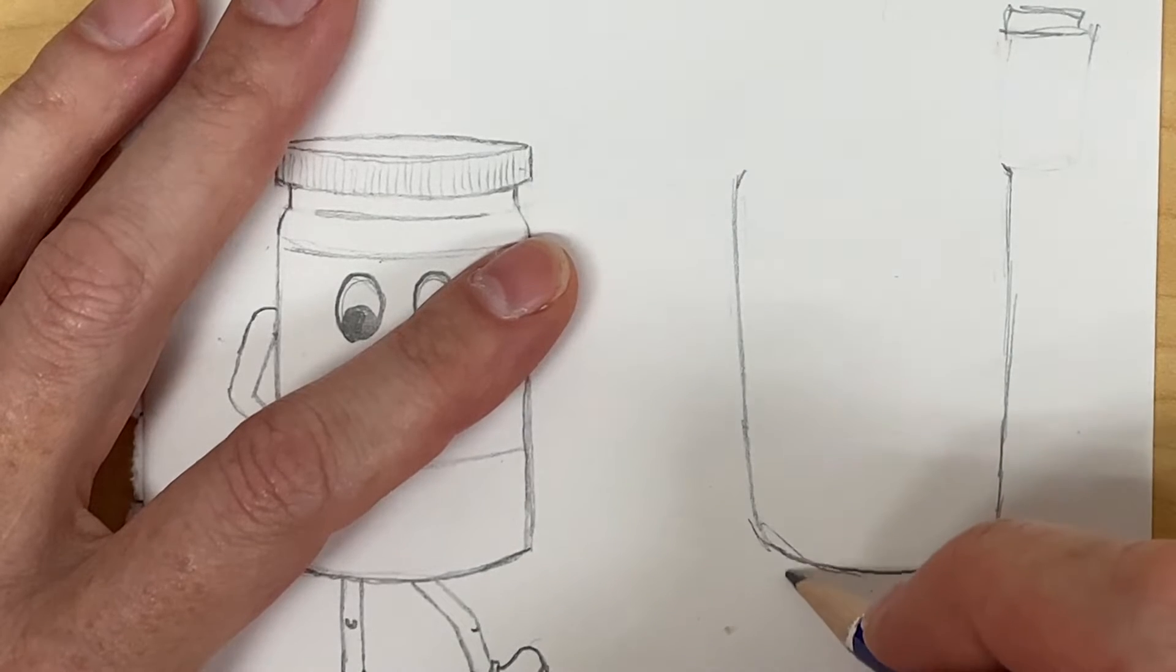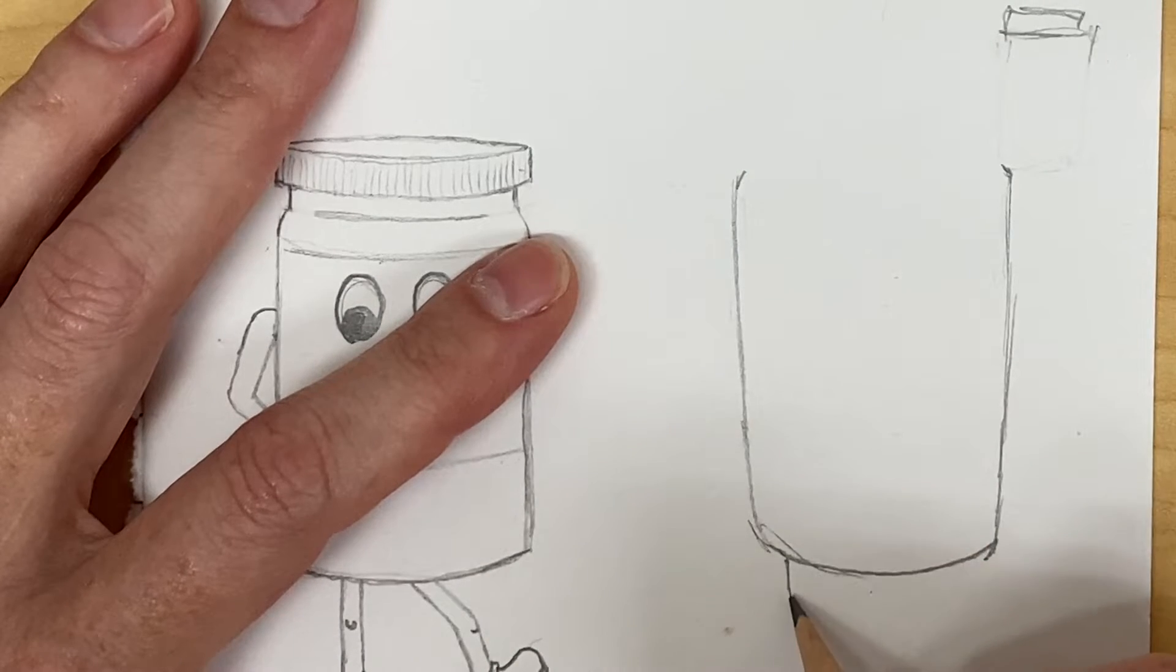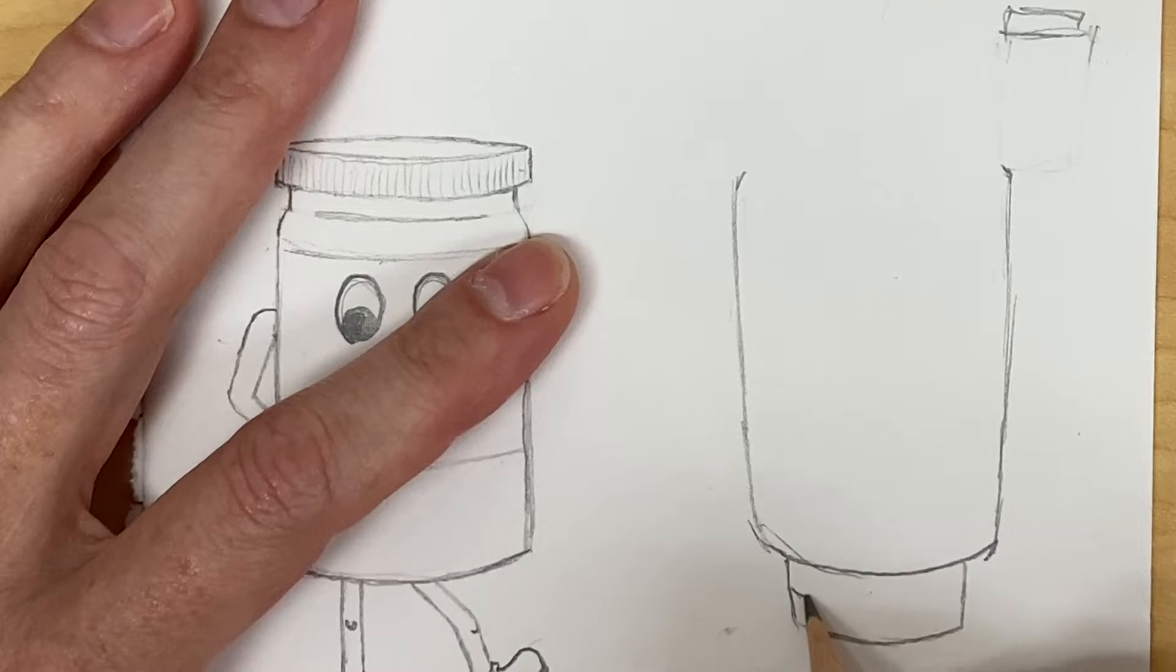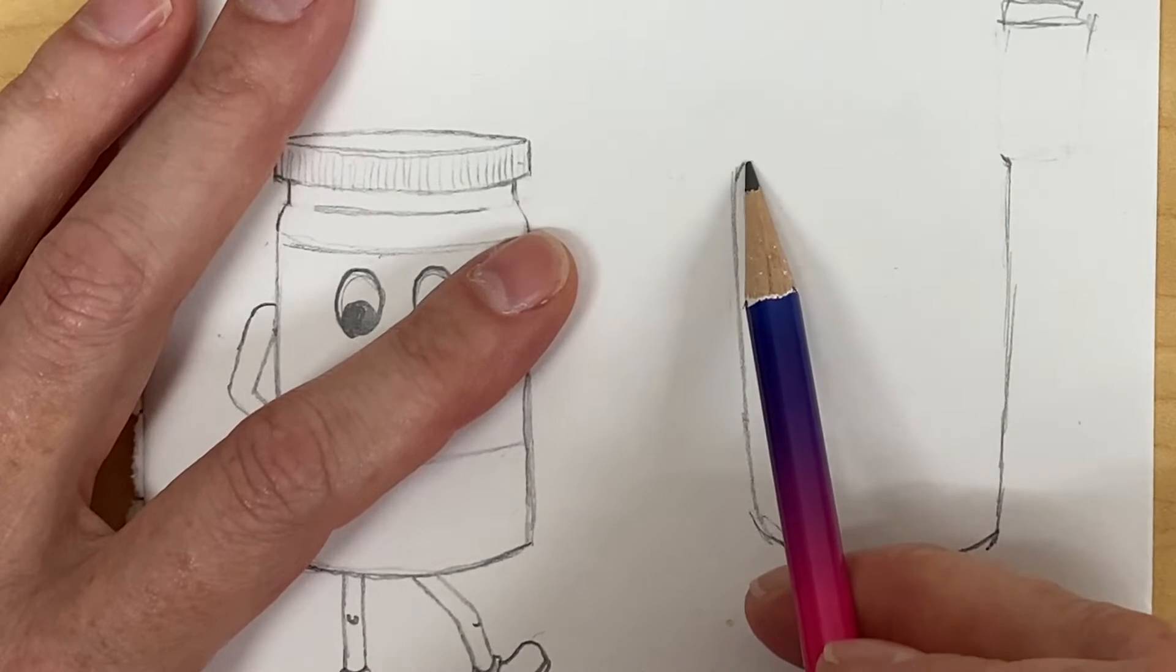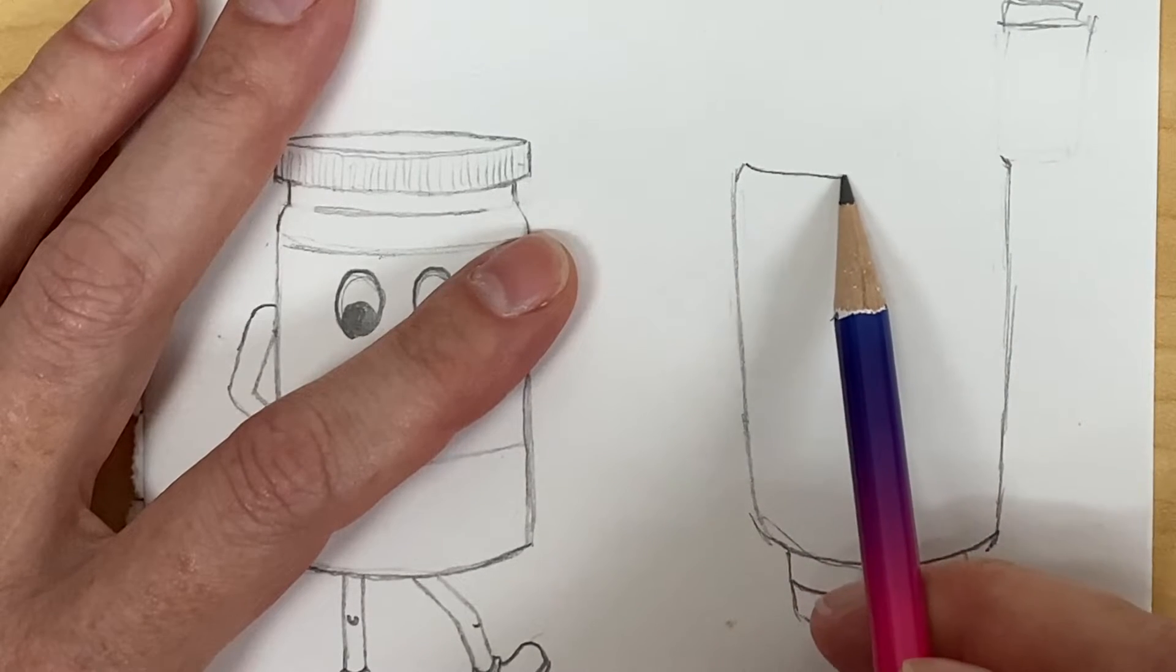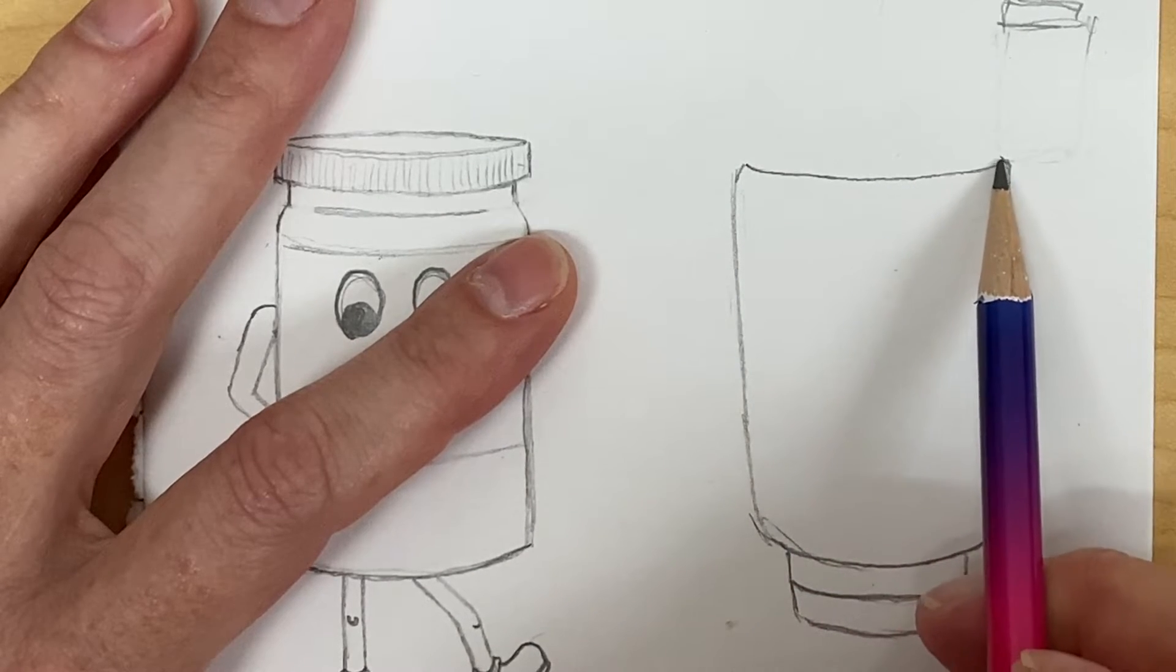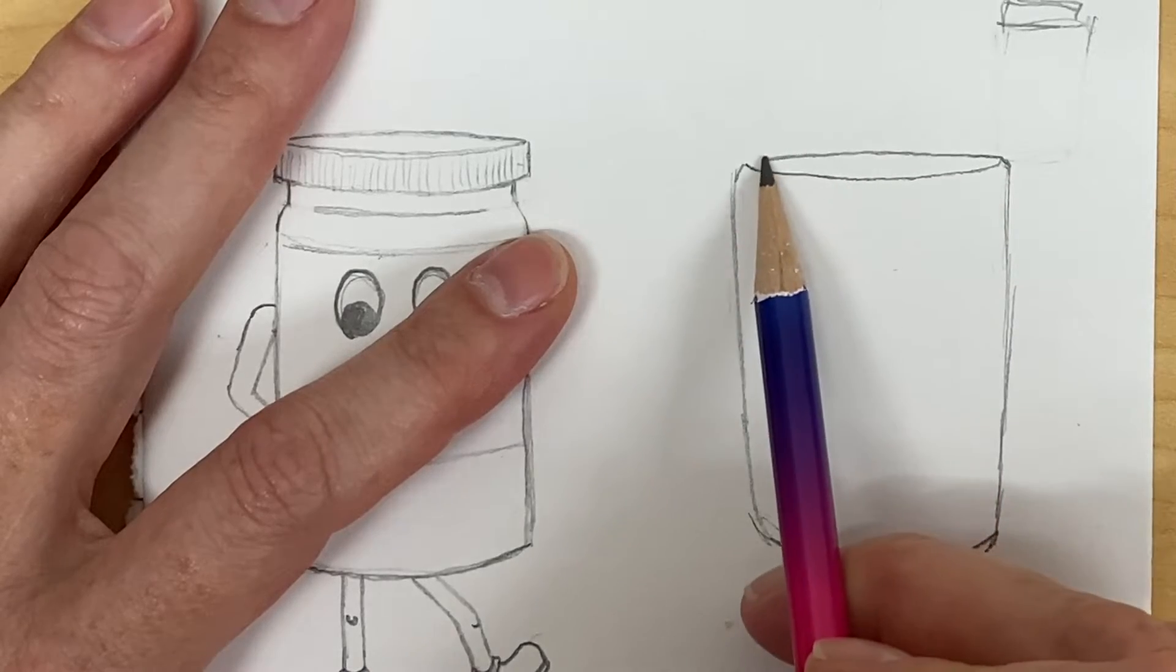Okay and then we're gonna make a little lid. Stop our thing. Curve that. And then we're gonna do an ellipse at the top where we kind of dip down and then circle up.